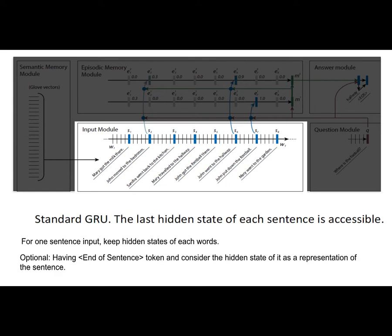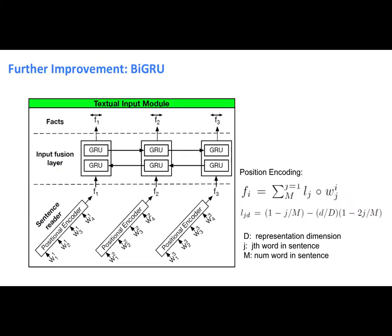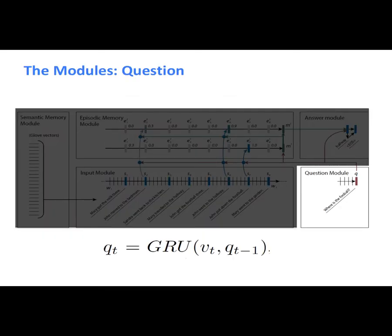The representation moves from left to right by default. One improvement is using a bidirectional GRU along with a positional encoder. The positional encoding formula is also applied to capture order information within sentences.